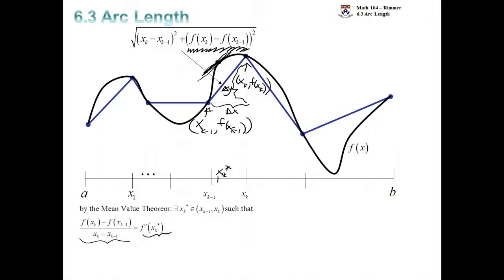We're going to multiply both sides by the denominator and get the numerator here is equal to the derivative times this difference in x. Notice this is exactly the quantity that is squared underneath our square root here. We are going to replace that left-hand side with the right-hand side, the derivative at xk star times this difference in x's.